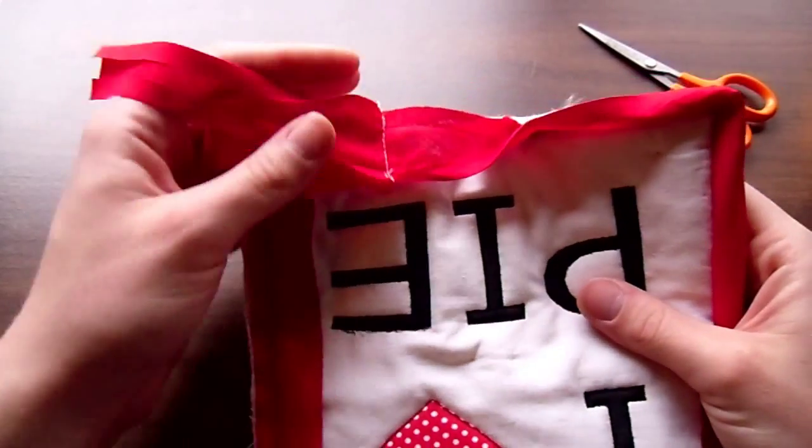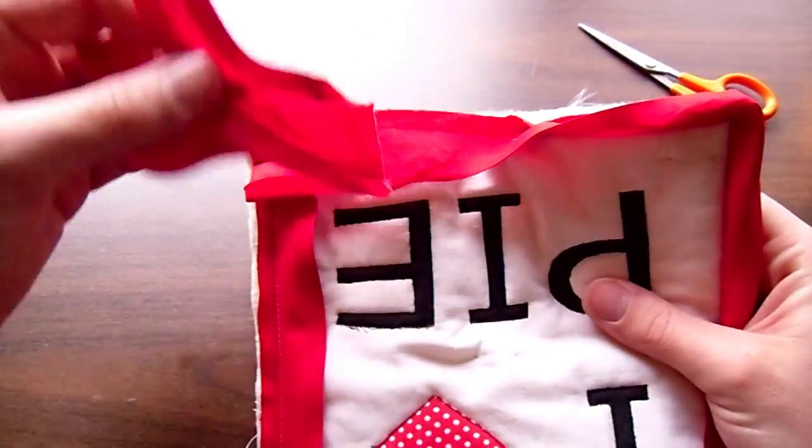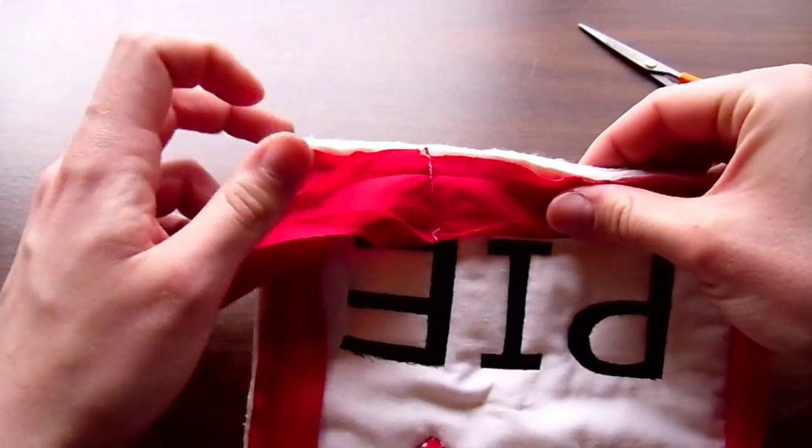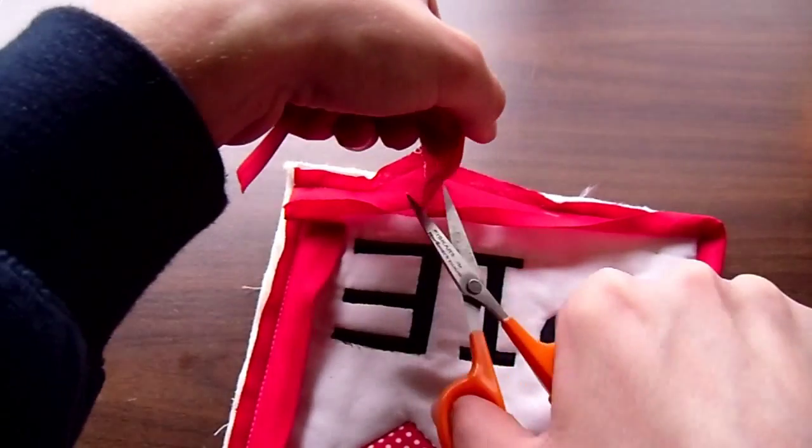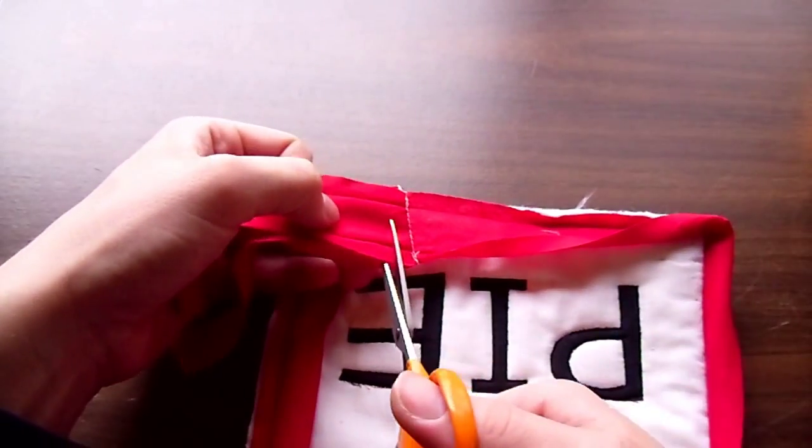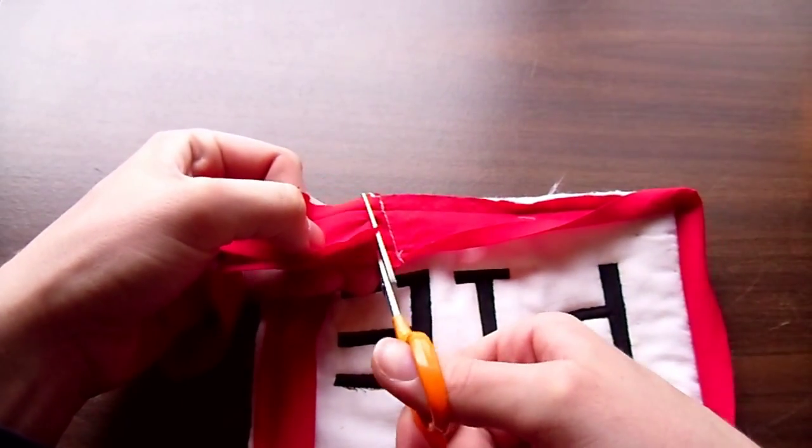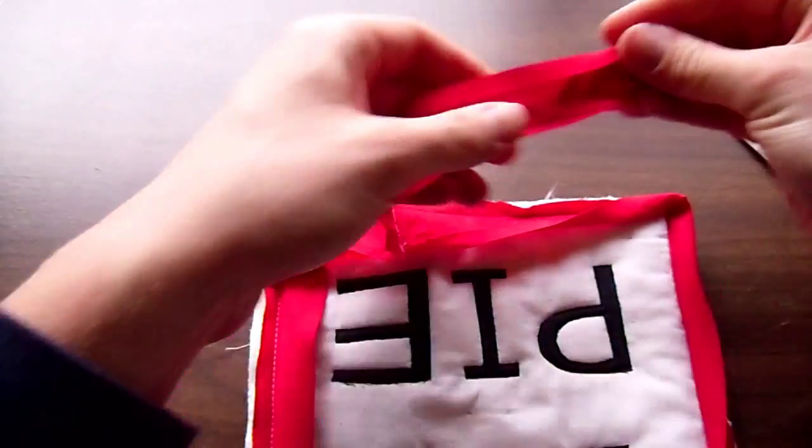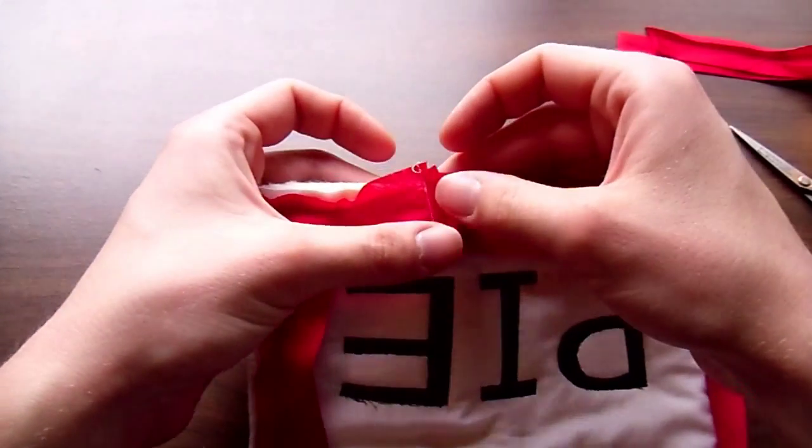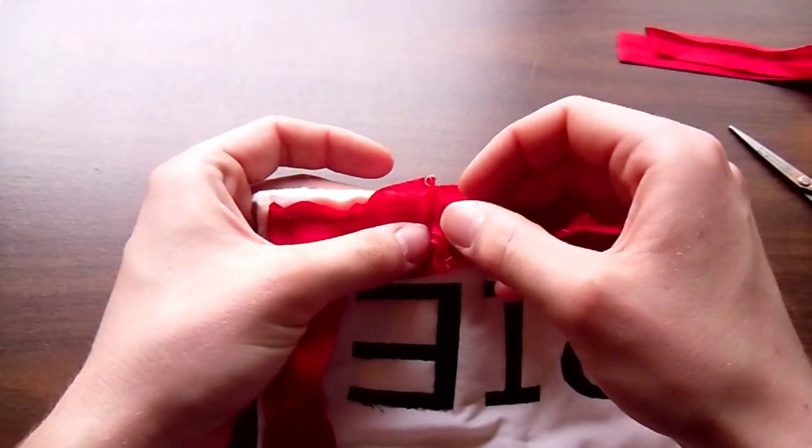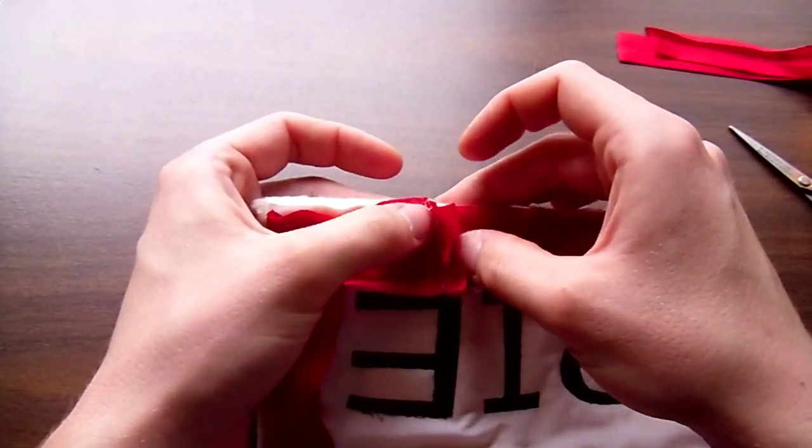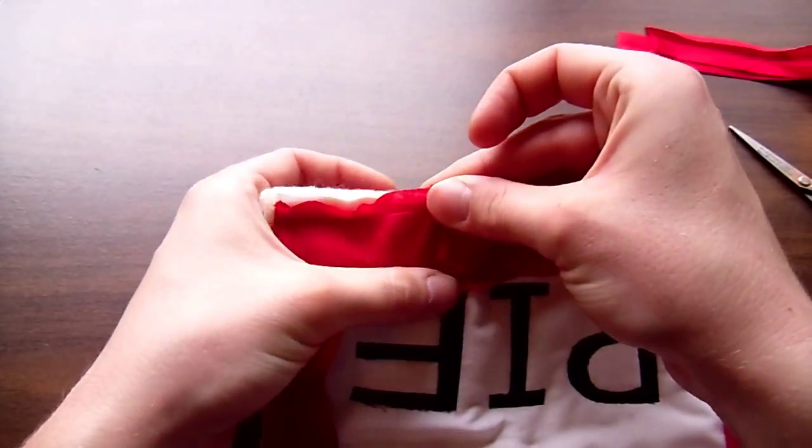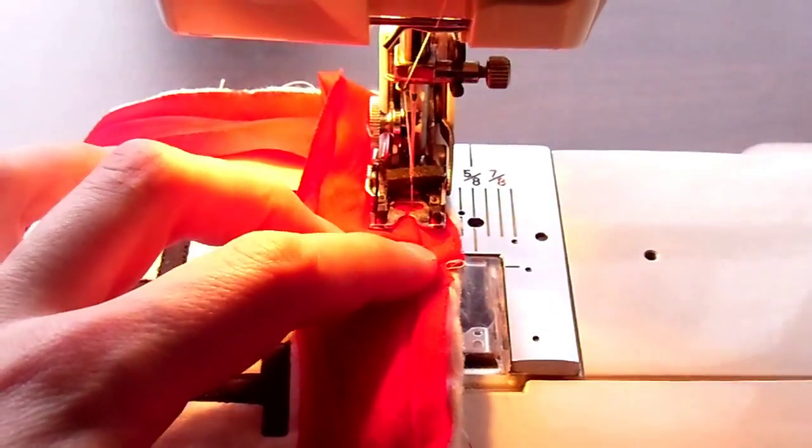After working all the way around and stitching the two ends together, trim away the excess and open up the seam. Stitch over the final section of binding.